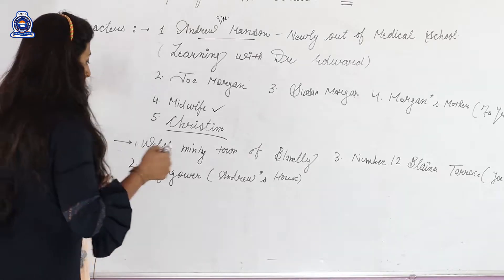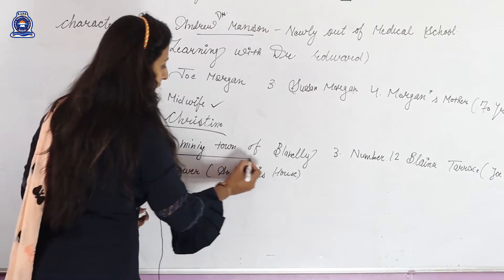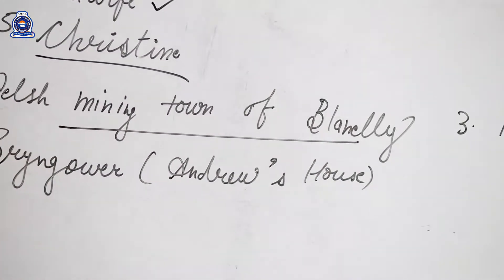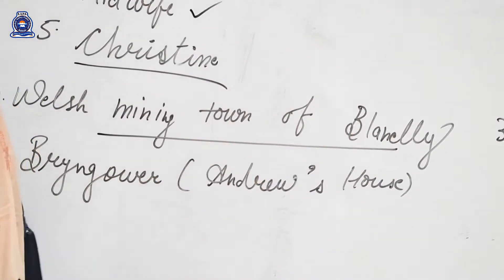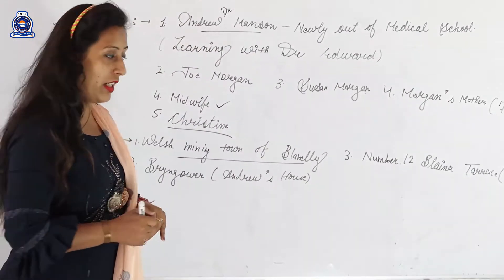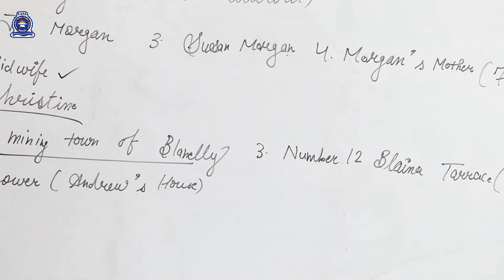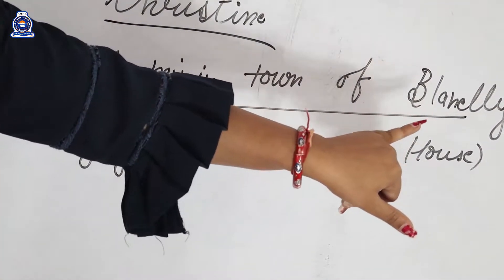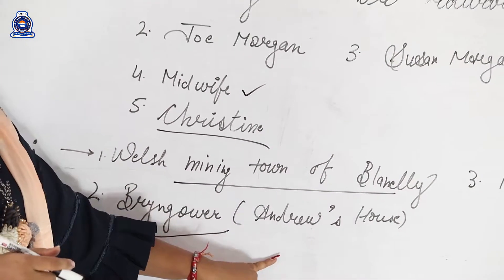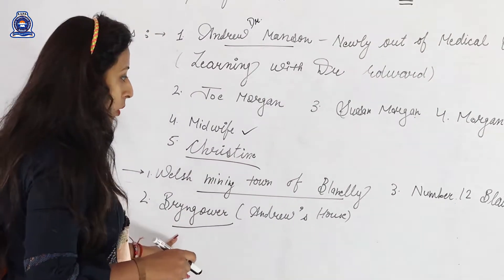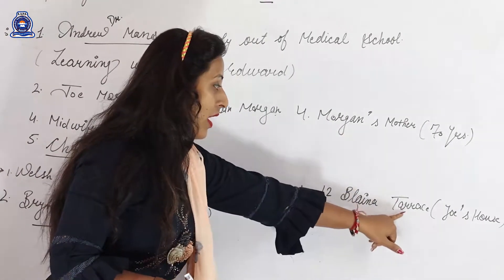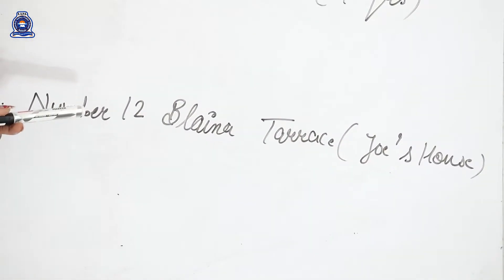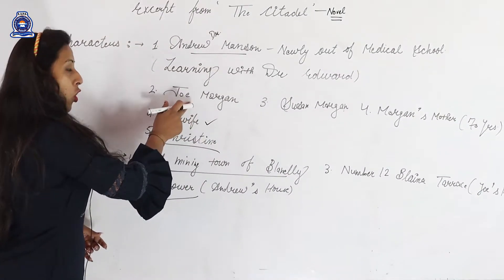Now let me tell you about the places. The first place is the Welsh mining town of Blendley — this is the place where Dr. Andrew Manson completed his studies. Then there is Brantzover, which is Dr. Andrew's house. And then there is number 12 Blenna Terrace, which is Joe Morgan's house — the house where Suzanne Morgan is about to deliver her baby.